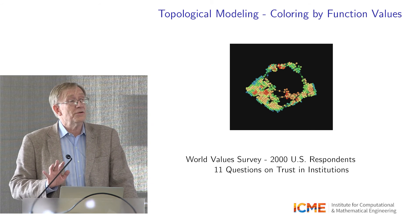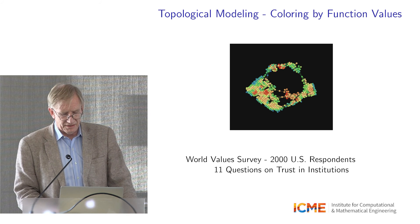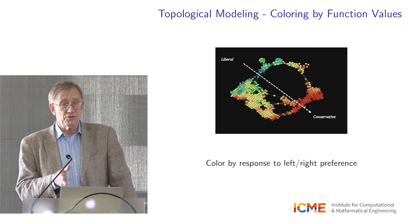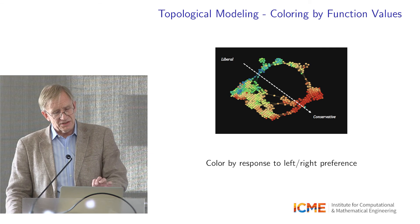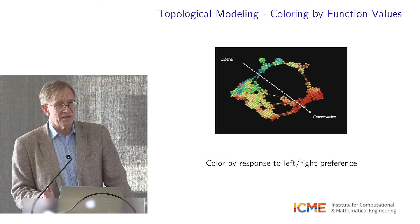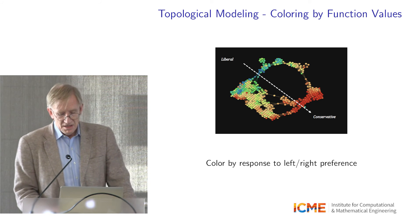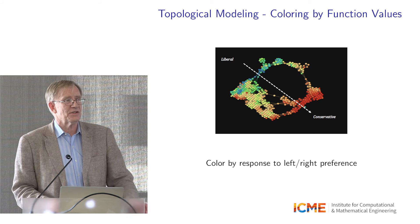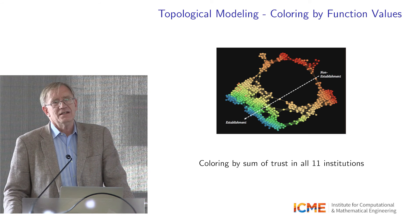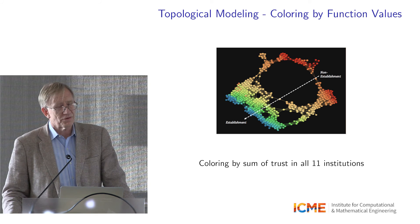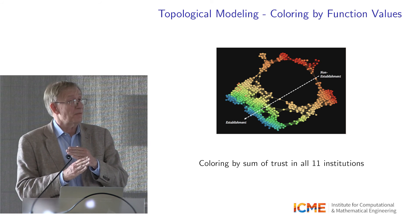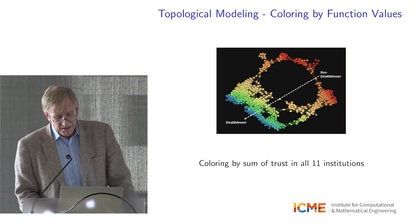What's interesting is you can do the same kind of modeling as in physics on this social science analysis, because you can color by other questions. One question not used in building the network asks: do you have right or left preference on a scale of one to ten? The heavy bottom part is people on the right — conservative — and the people in the upper left are liberal. You can also color by aggregate trust in institutions — the sum of trust across all institutions — and find that the upper right group trusts institutions very little, while the lower left has more trust than you might otherwise think. Those are two independent coordinates: right-to-left status and trust in institutions.